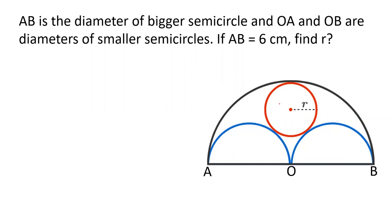So, one geometry question is popular. If we can see this question, we will be able to solve it. But if we already know this shortcut, we can tell the answer very fast. When this question comes — with AB as the diameter — and in these three semicircles there is one inscribed circle, in any case this circle's radius is 1/6 of the diameter of the bigger semicircle.